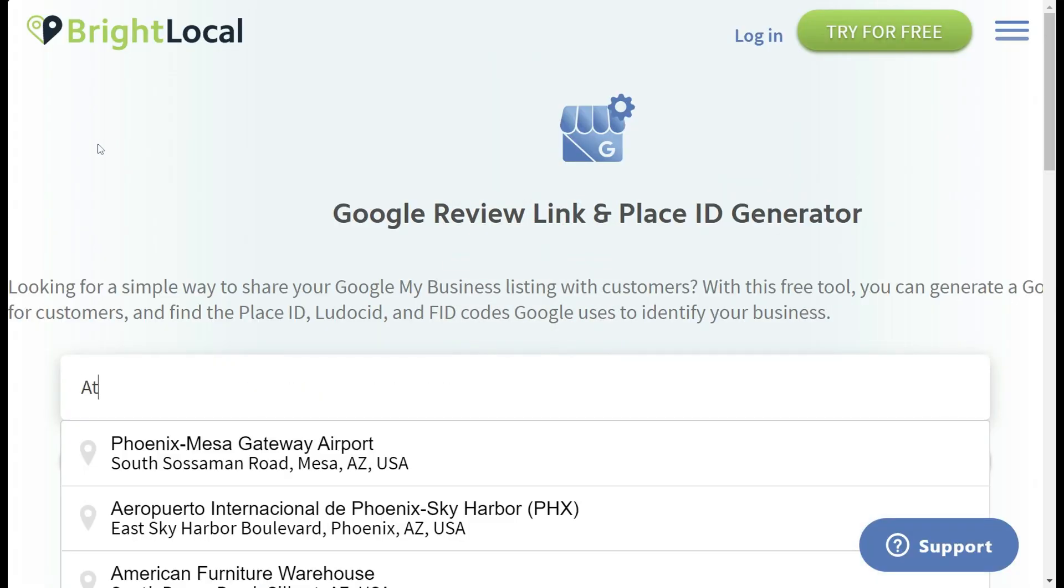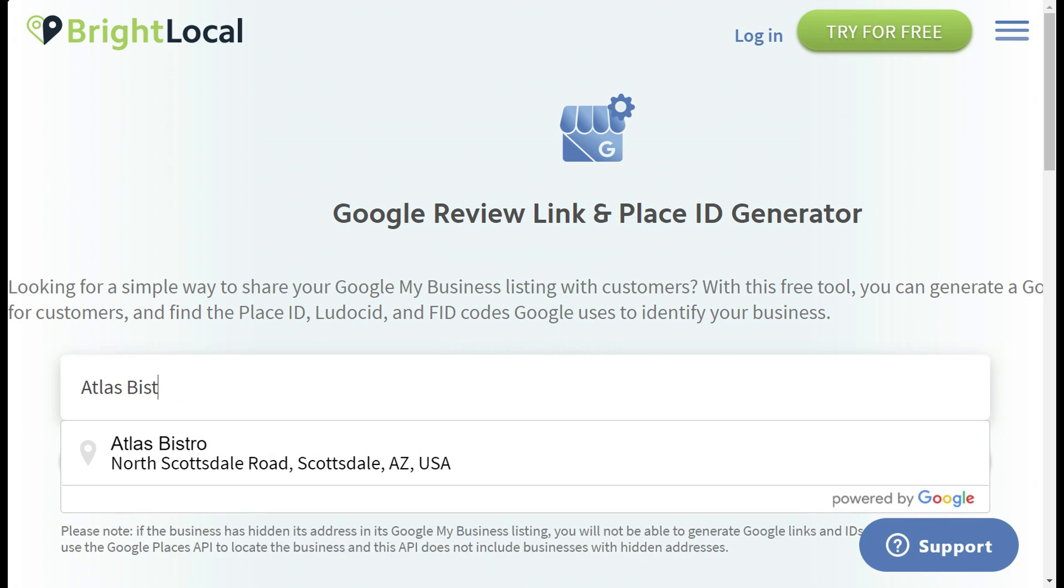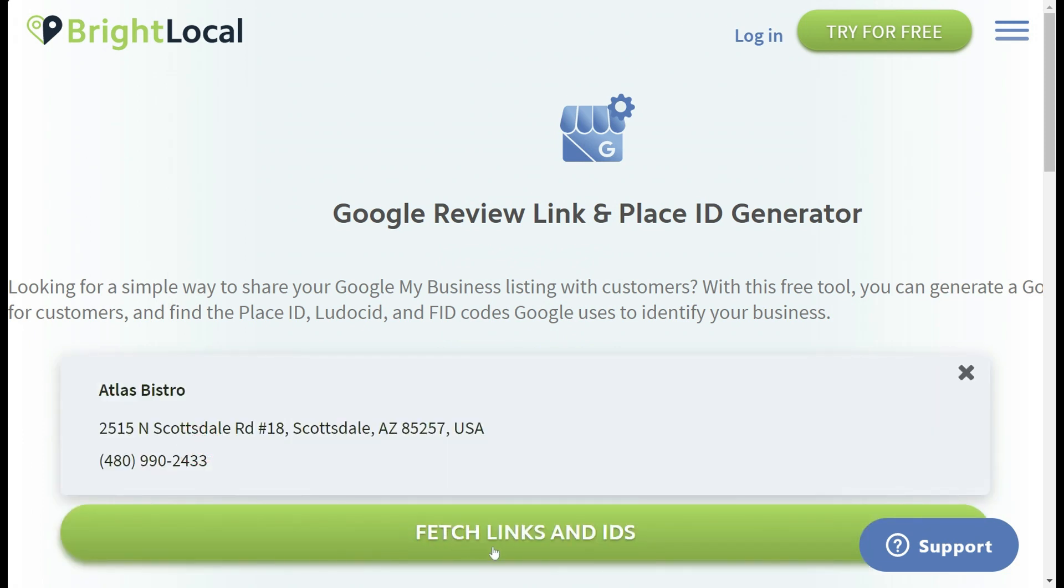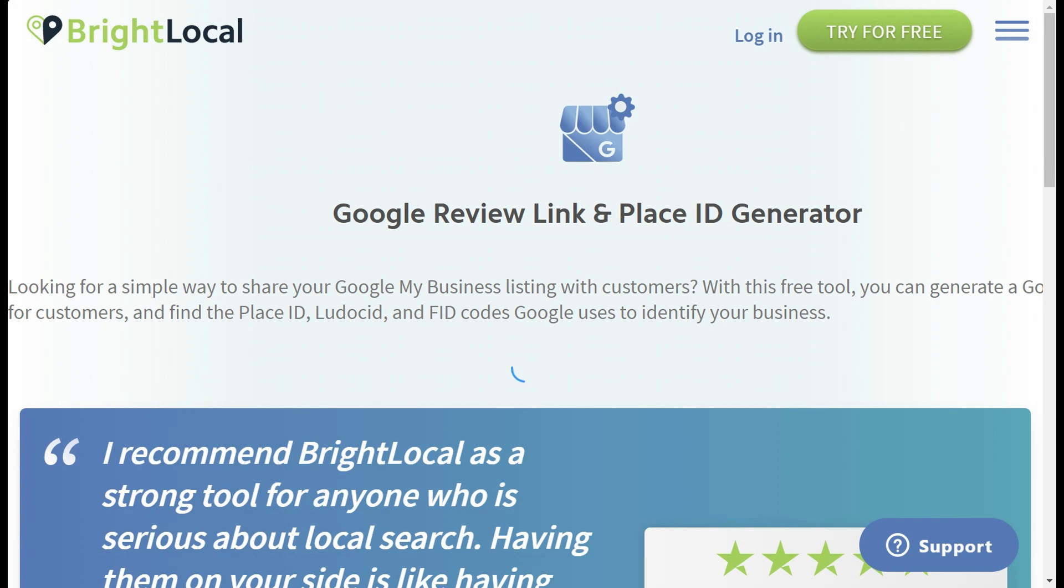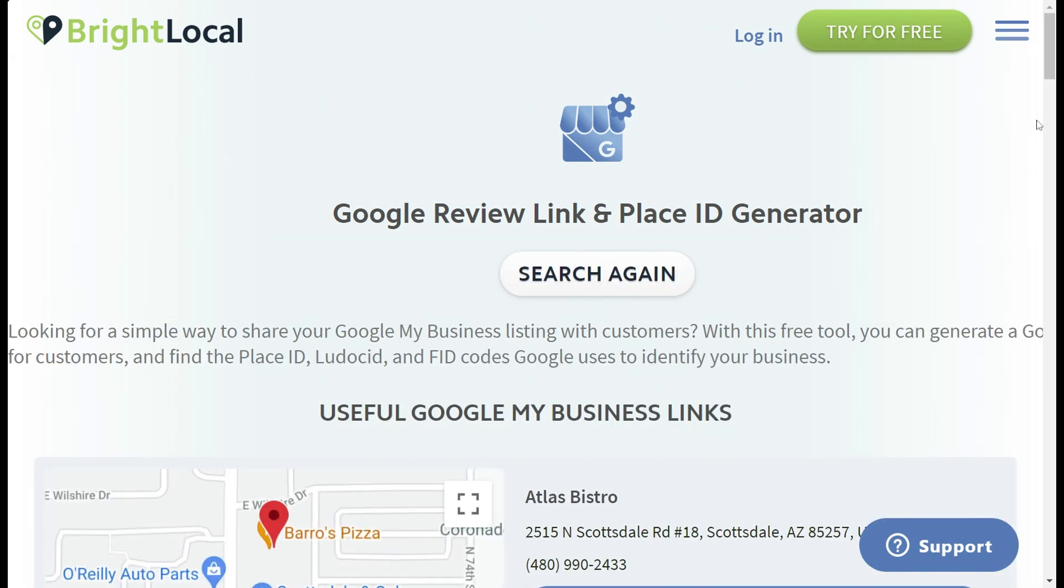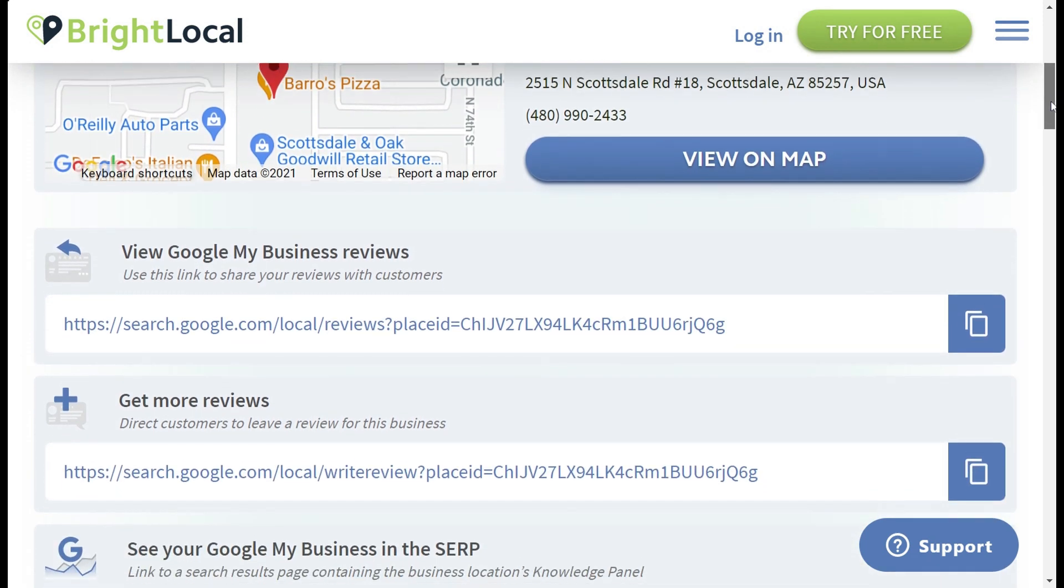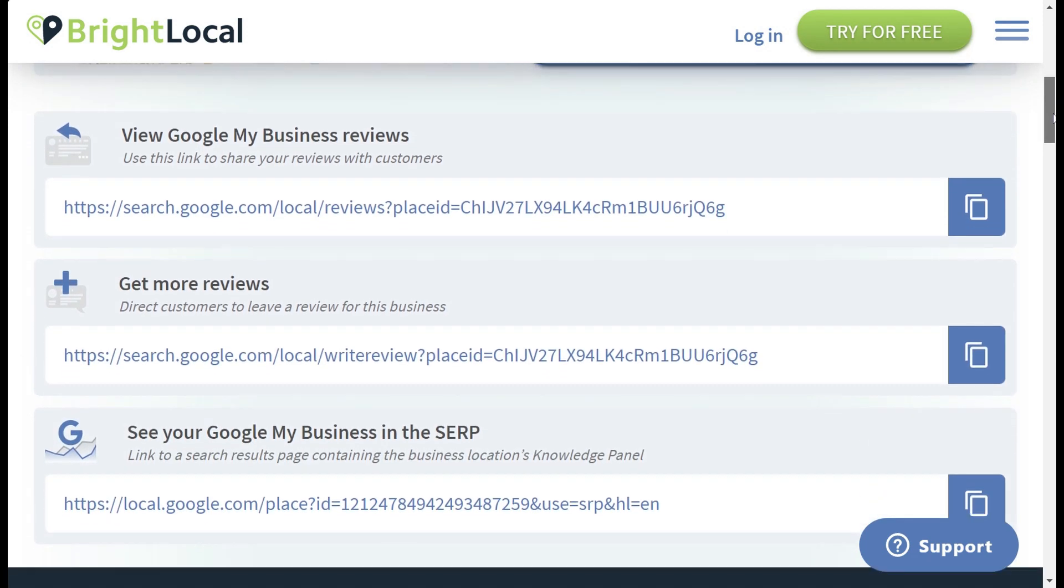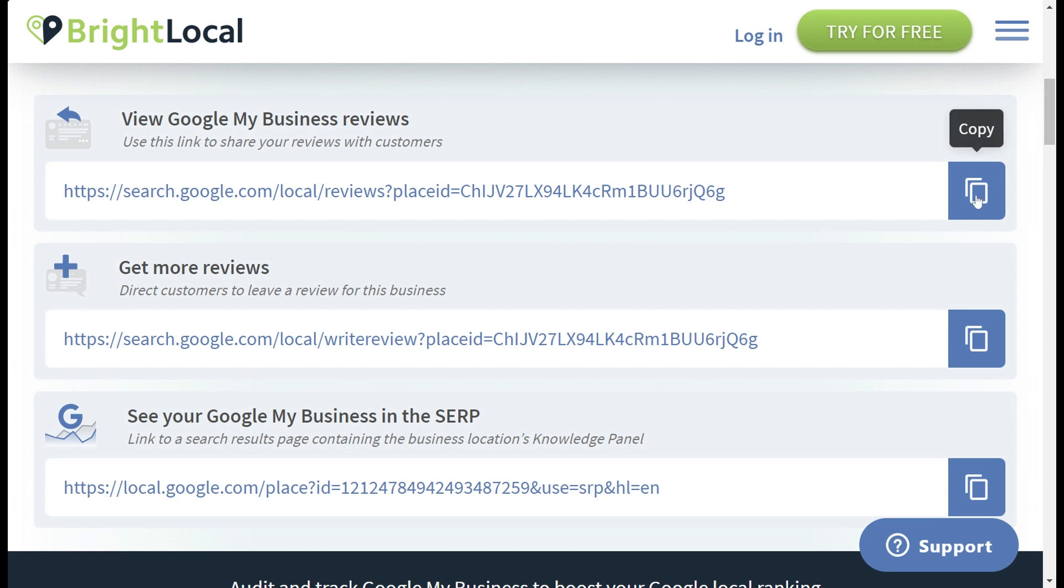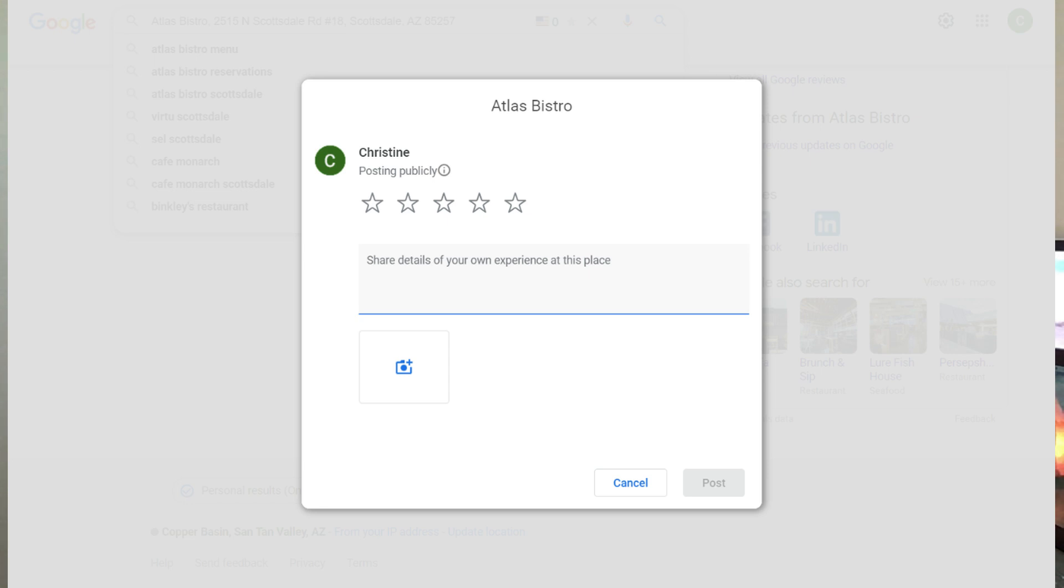Now the second tool is Bright Local's Google Review Link and Place ID Generator. Reviews are so incredibly important for SEO and it's important to make sure businesses are working hard to generate great reviews. So this is a really great and free way to make it easier to ask for reviews. You're able to generate the links and IDs that Google uses to understand the business that you're working with. You can use the View Google Reviews to share your reviews with customers or potential customers and there is a Get More Reviews feature where you can use this to direct customers to leave a review for the business.